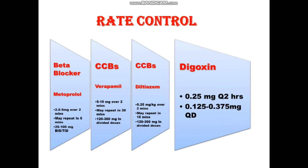Digoxin is the appropriate choice whenever a patient with atrial fibrillation also has congestive cardiac failure. The loading dose is 0.25 mg every 2 hours, with a maximum dose of 1.5 mg per day. The maintenance dose is 0.125 to 0.375 mg once daily.